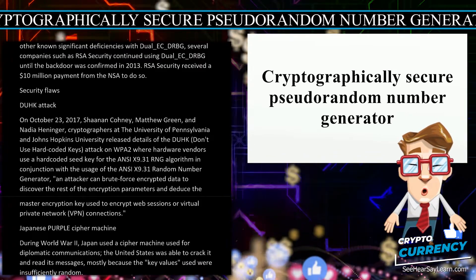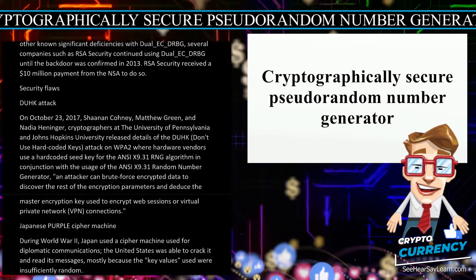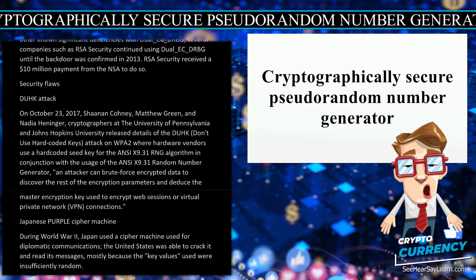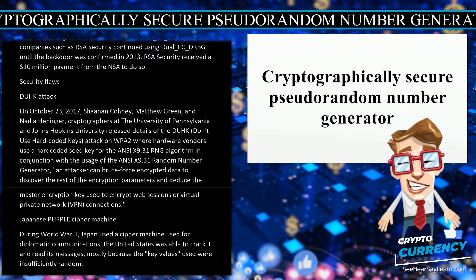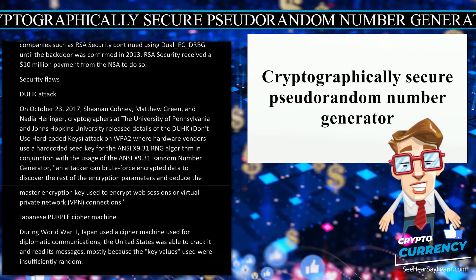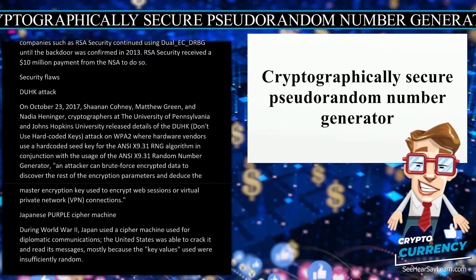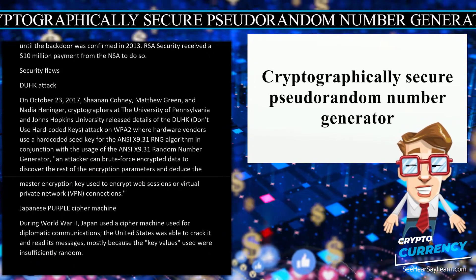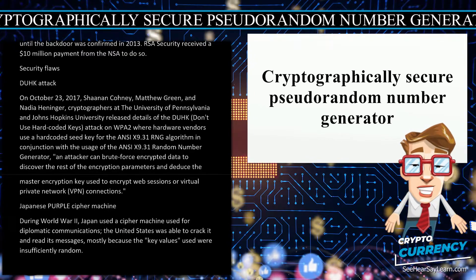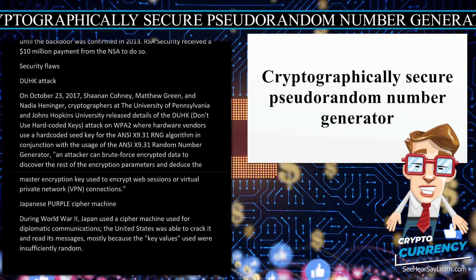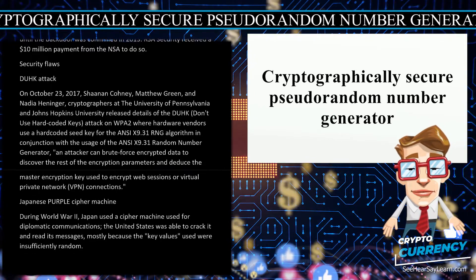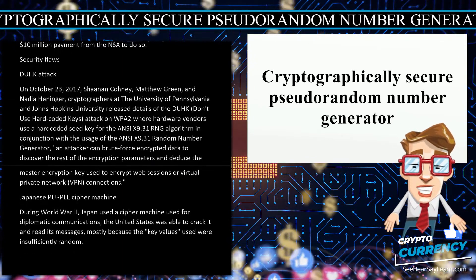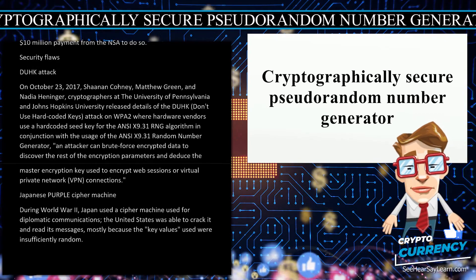Historical example — Japanese Purple cipher machine: During World War II, Japan used a cipher machine for diplomatic communications. The United States was able to crack it and read its messages, mostly because the key values used were insufficiently random.